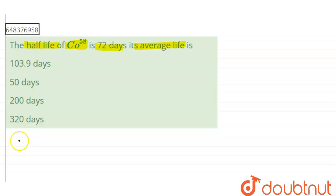So, T half or TH is given to be 72 days. Now we have to find the average life, that is T average has to be found out.